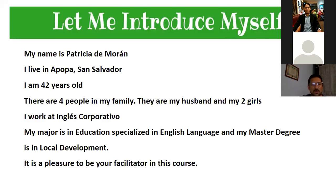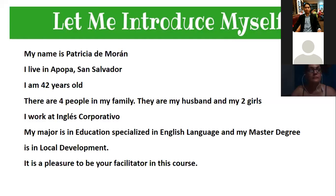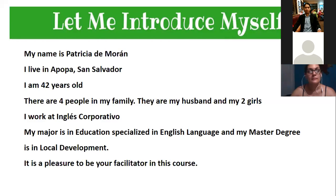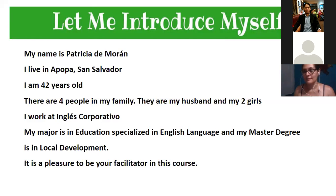My name is Julio Figueroa. I live in San Salvador. I am 54 years old. There are seven people in my family — my wife and my five girls. I work in architecture — so you are an architect. Excellent, thank you! Jennifer Aquino, would you like to continue?